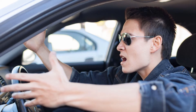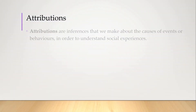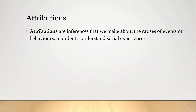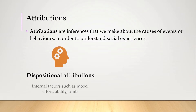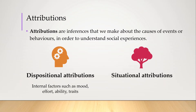In psychology we call the inferences that we make about the behaviors of others or about what causes events, attributions. There are many examples of attributions but they can be broadly classified into two groups: dispositional or personal attributions, which are internal reasons like a person's mood or ability, or situational attributions, which are external reasons such as the environment or luck.